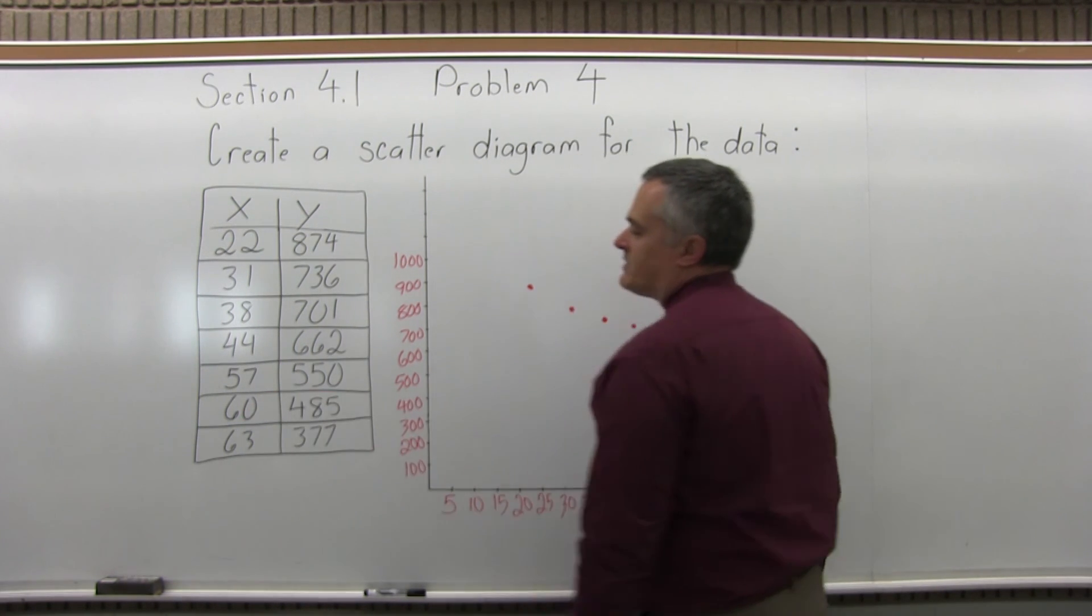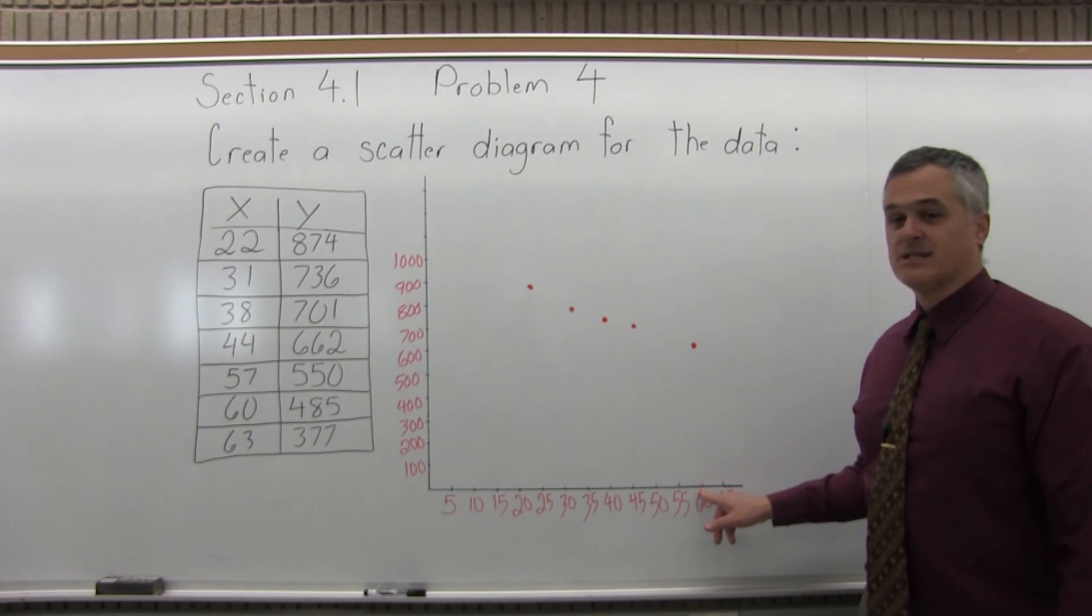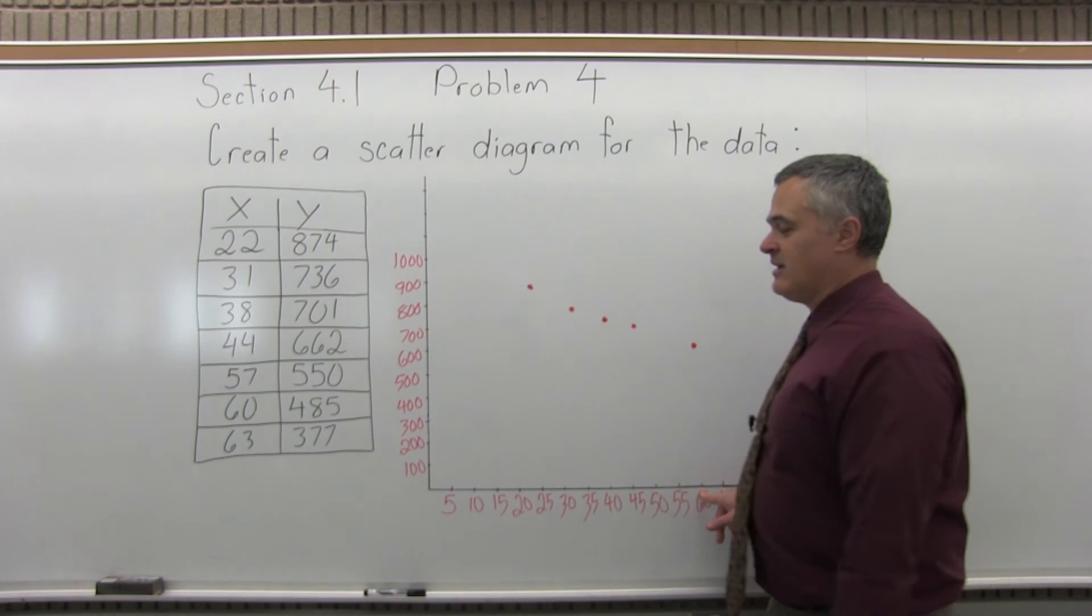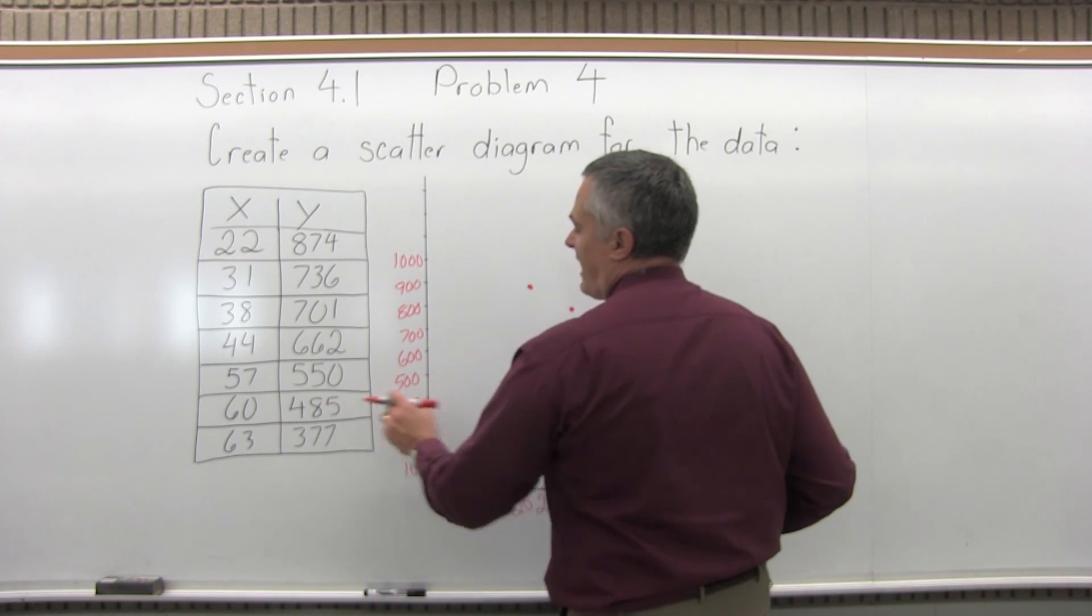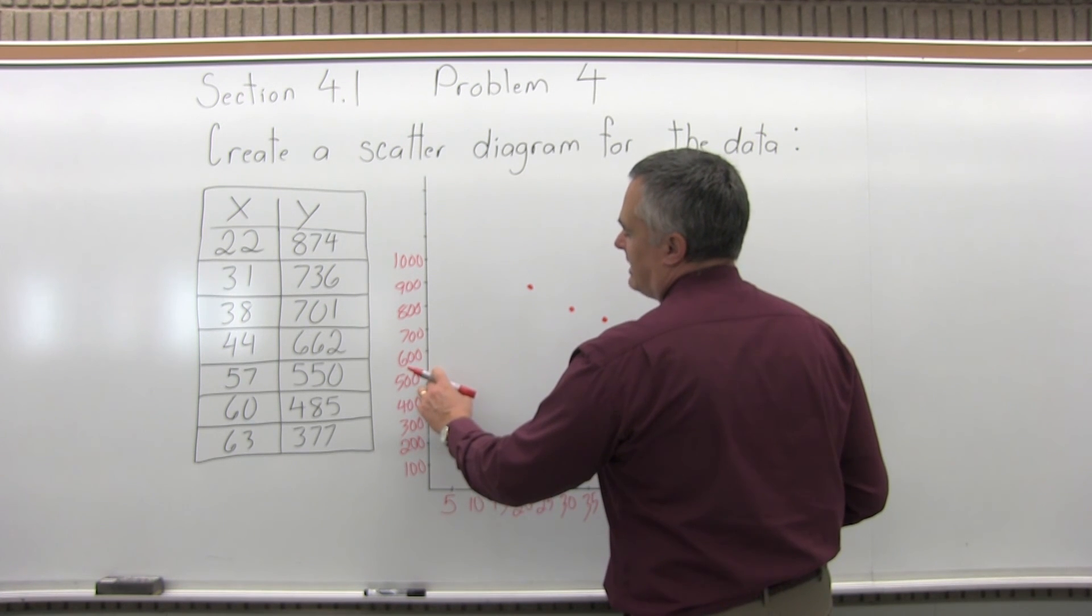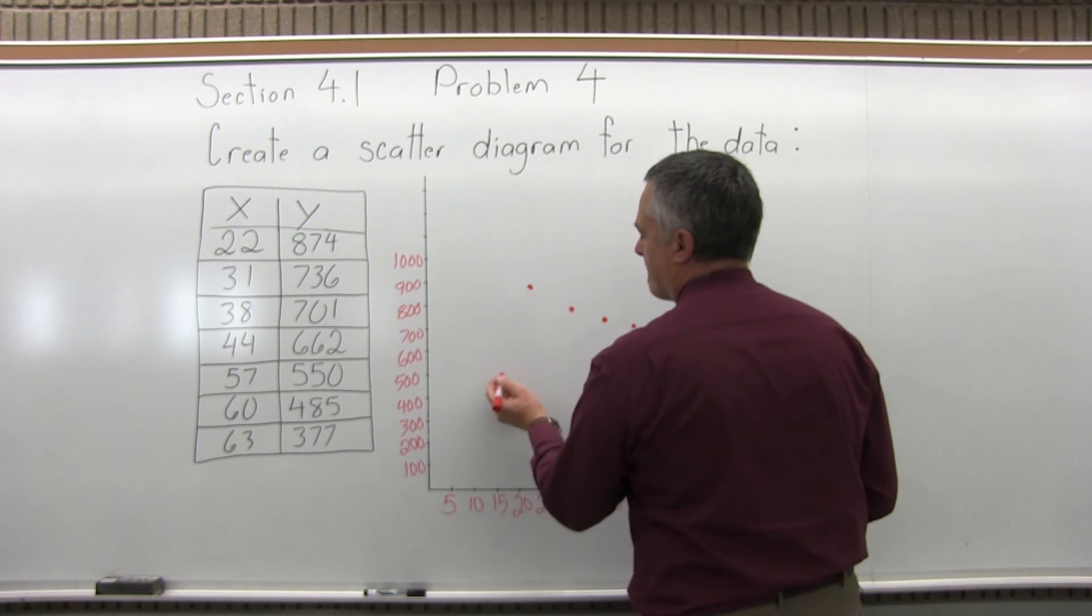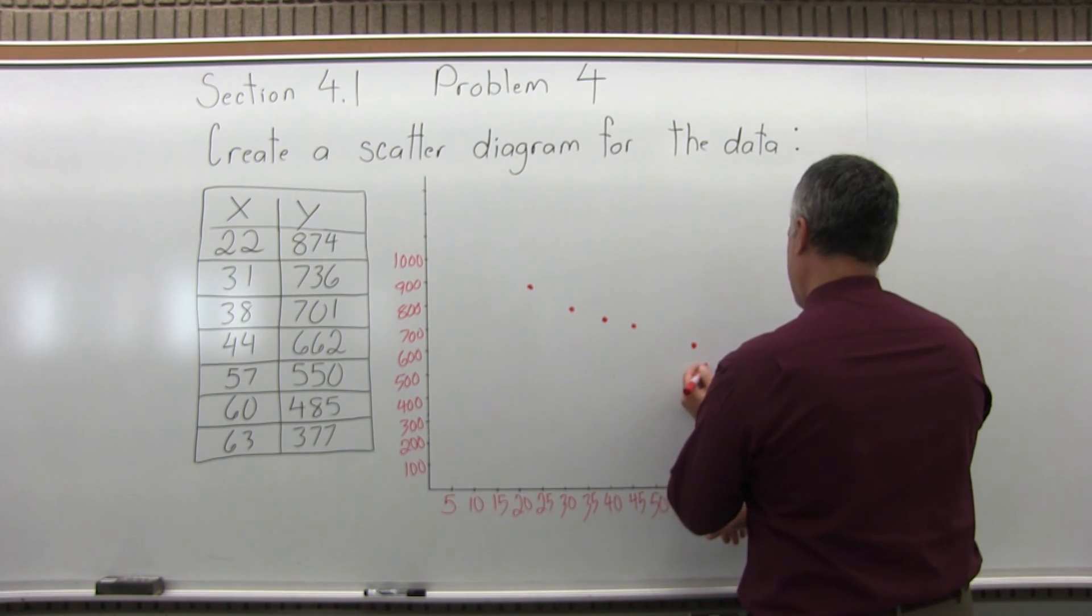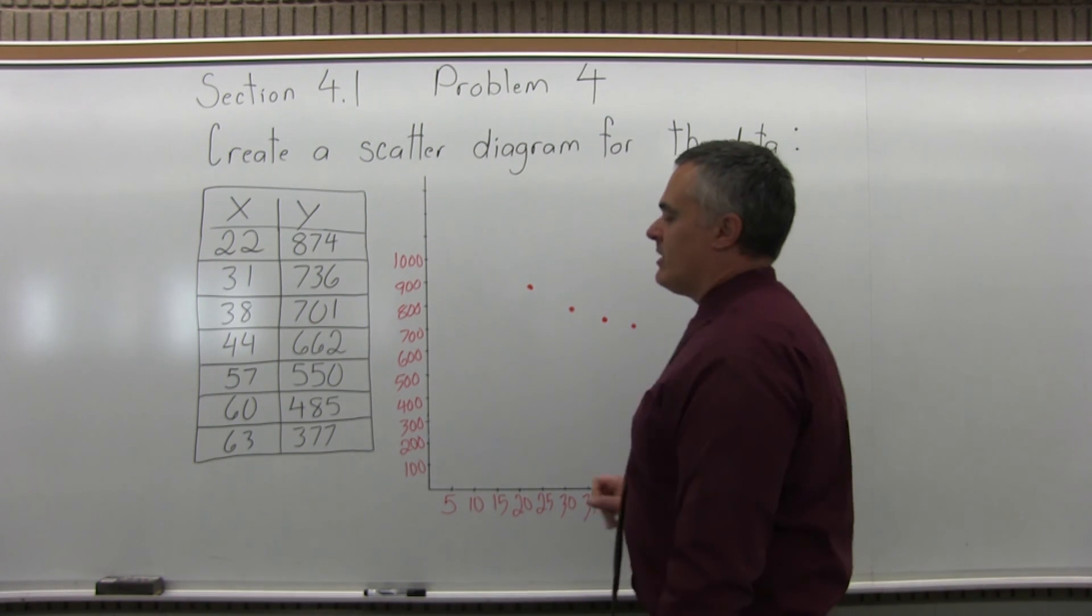The next point down over 60 for X and up 485. I do have exactly 60 on the X axis. So that would be the X value for the over 60. Up 485. I don't have 485. It would be a little bit less than 500. A little more than 3 quarters of the way up. About like that.